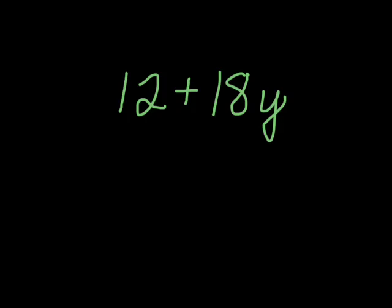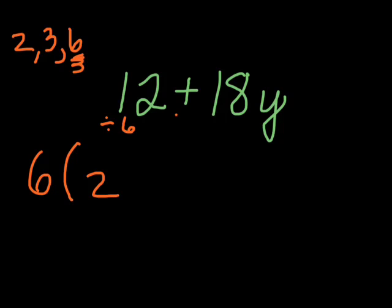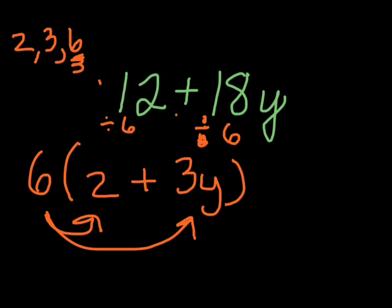12 and 18y have what factor in common? Well, they're both divisible by 2, both divisible by 3, both divisible by 6. I always want to go with the greatest common factor, so I'm going to factor out a 6. They have no variables in common, so all I can factor out is 6. So I do 6 times the quantity—12 divided by 6 gives me 2, that's the first term, and 18y divided by 6 gives me 3y. So 12 plus 18y is equivalent to 6 times the quantity 2 plus 3y. Again, if you wanted to check yourself, you could redistribute and you should get what you started with.